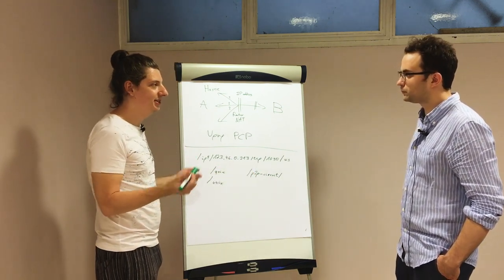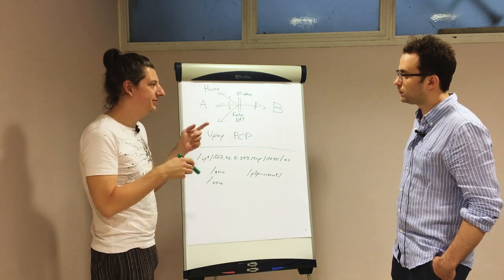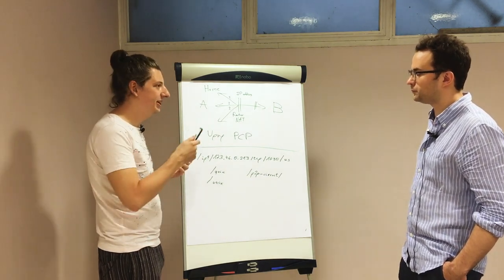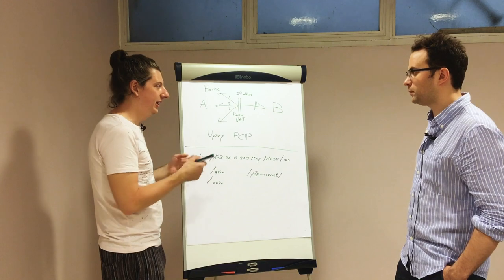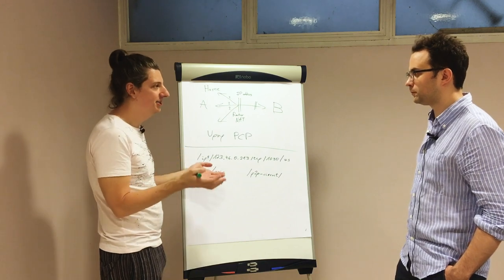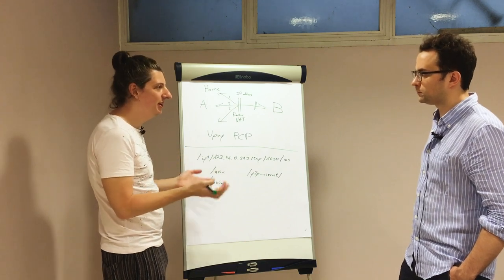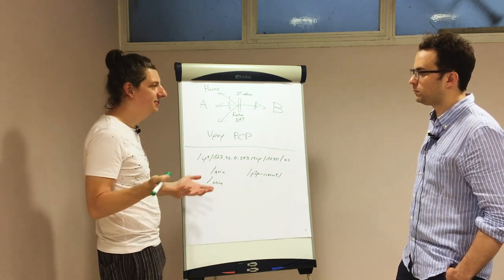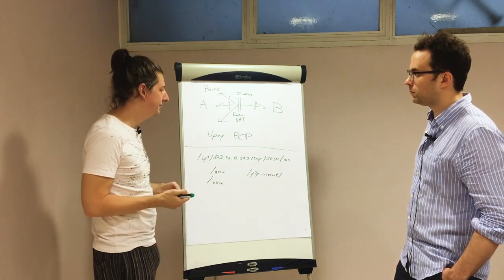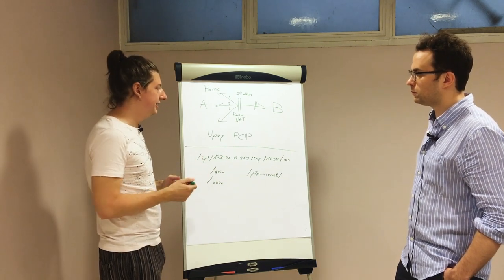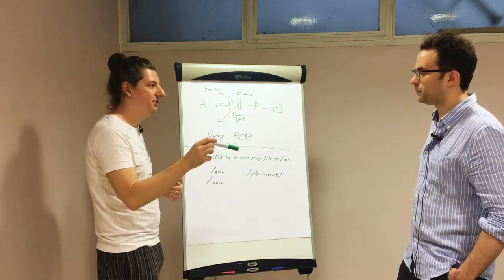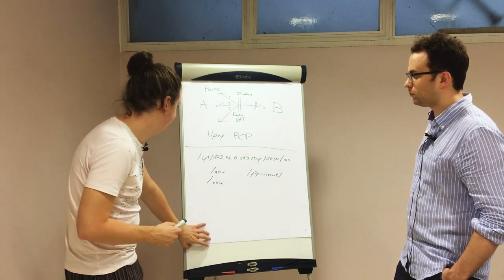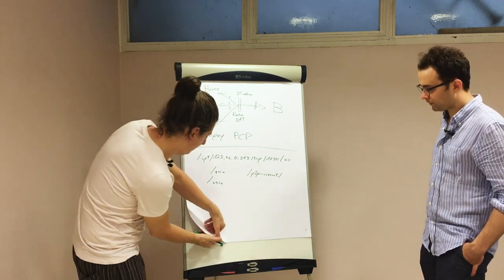Peer identities and public/private keys are part of the core. The public key has a specific format, and then you hash it in a specific way — that gives you the peer identity of a node. Negotiating a protocol is also part of the core.